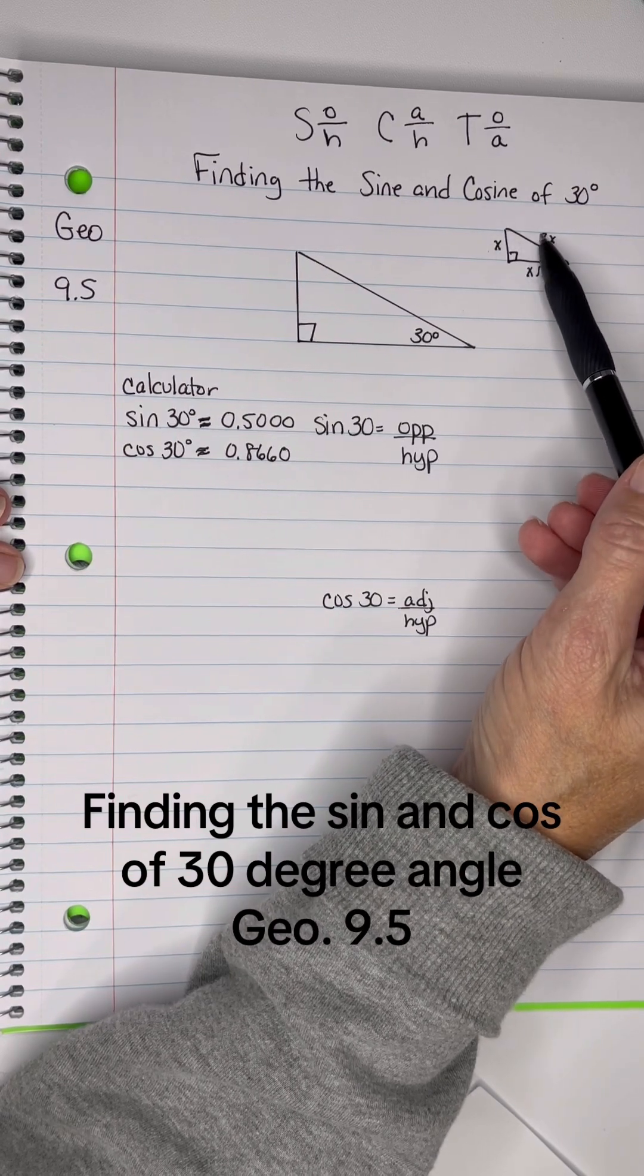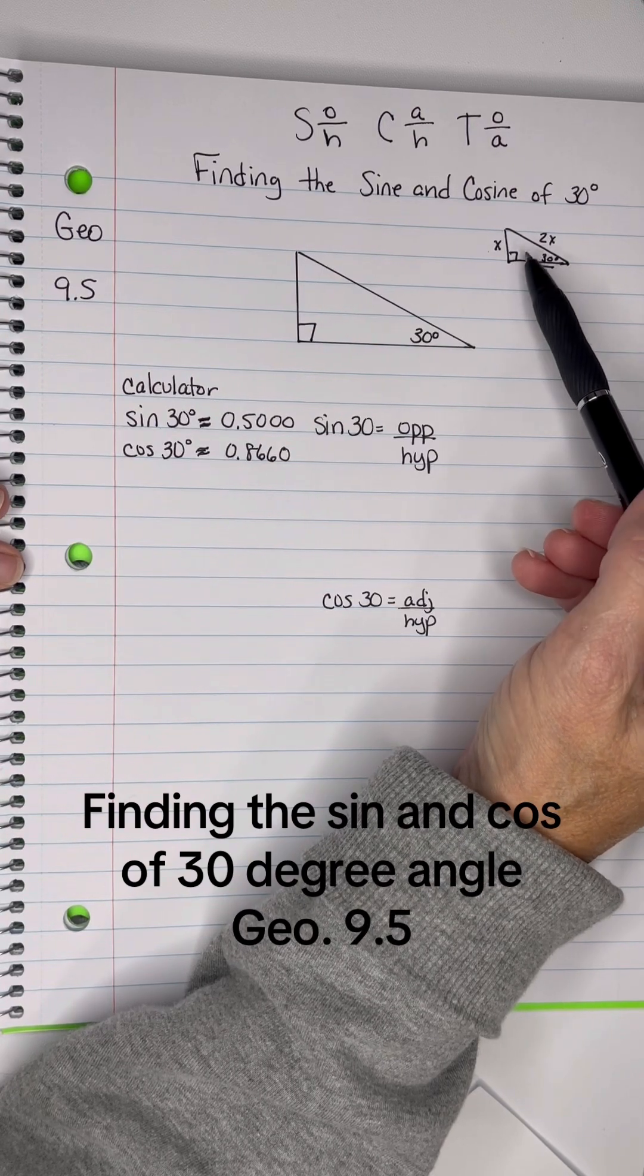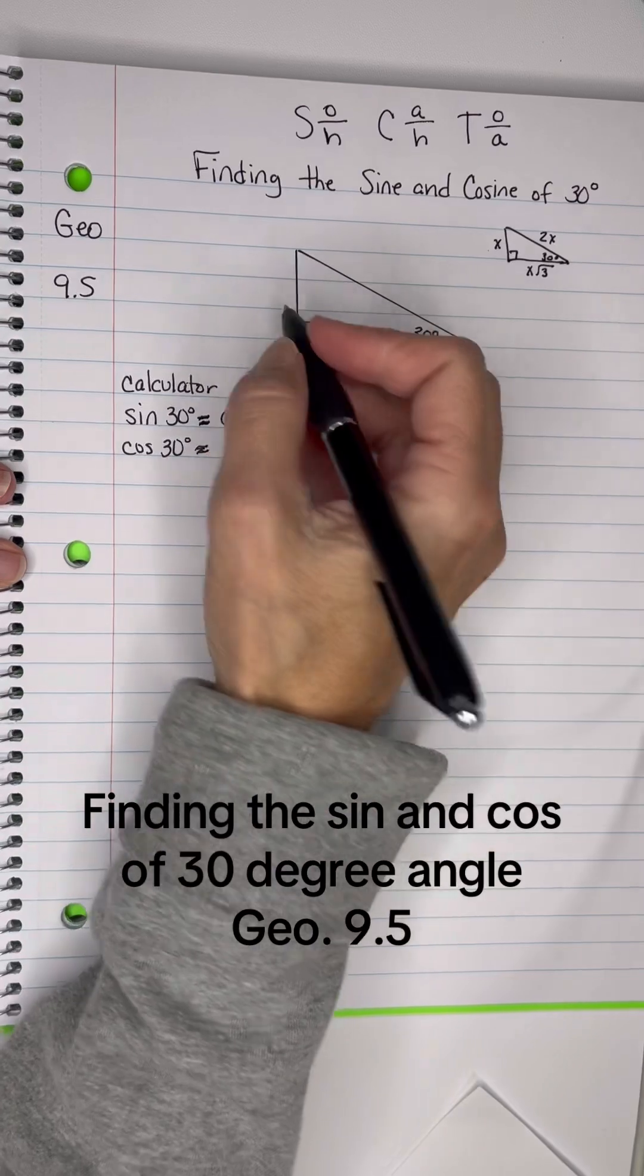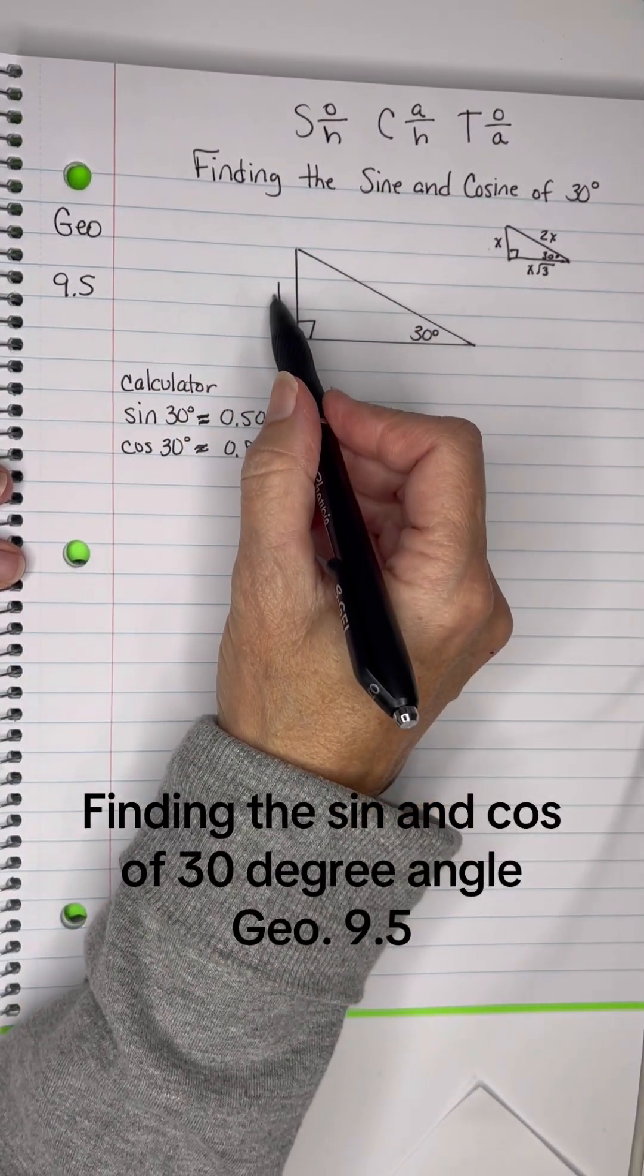We had a song, x to 2x and x root 3 for the 30, 60, and 90, okay? So, let's let our x be 1. To make things really simple, we've got x is 1.